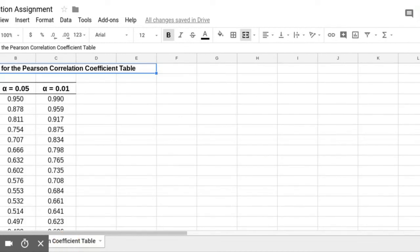Okay, so to find the critical value at 0.01, we're going to click on our other tab and we're going to find where the n is 10 and the alpha is 0.01. So our correlation coefficient is 0.765.